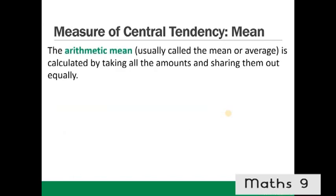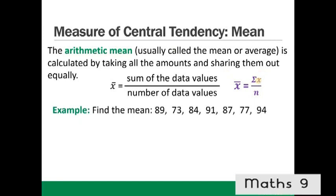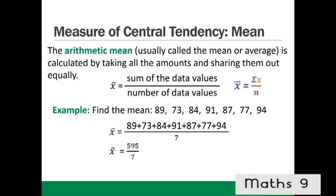The mean. The arithmetic mean, usually called the mean or average, is calculated by adding all the amounts and sharing them out equally. The formula is x̄ = (sum of x) / n. For example, find the mean of these numbers: add them together, divide by 7, giving 595 / 7 = 85.